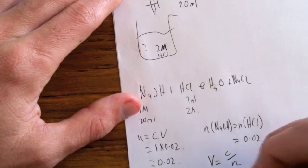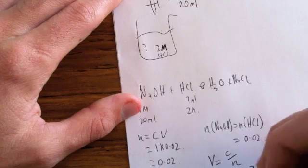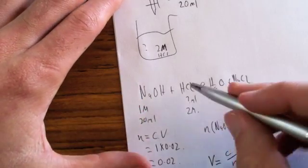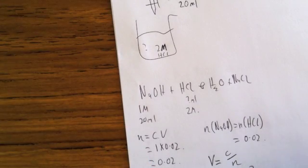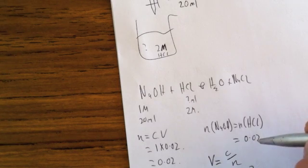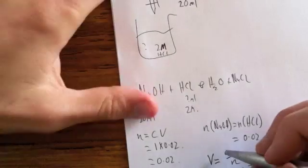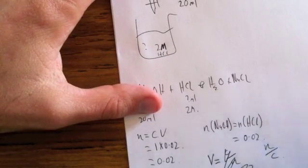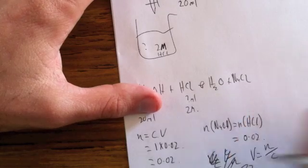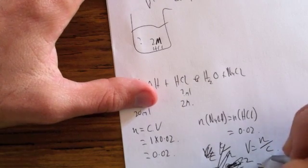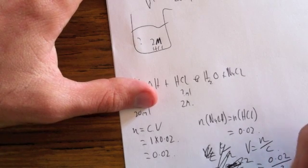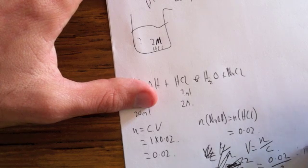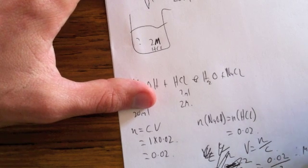No, concentration is 2. That's right, because this is not right. It should be number of moles over concentration. V equals number of moles over concentration. So therefore, our number of moles is 0.02 over concentration, which is 2, equals 0.01. So therefore, our mils equals 10 ml.